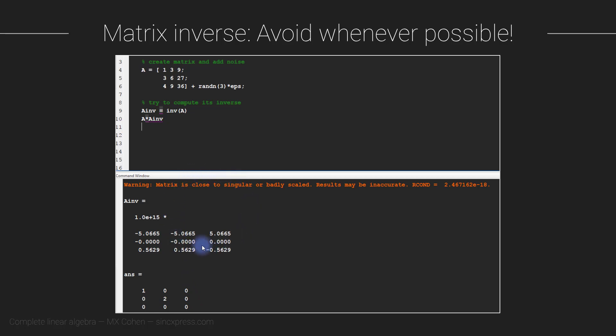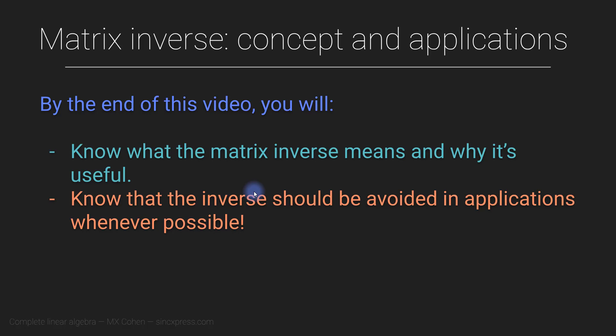In this video, I introduced the matrix inverse. Briefly: the matrix inverse is a matrix that multiplies another matrix to produce the identity matrix. The primary use is to solve matrix equations by canceling a matrix on one side of the equation. A matrix has an inverse if it is square and full rank. Finally, in practice you want to avoid explicitly computing the matrix inverse when possible. In the next several videos, you will learn different algorithms for computing it.